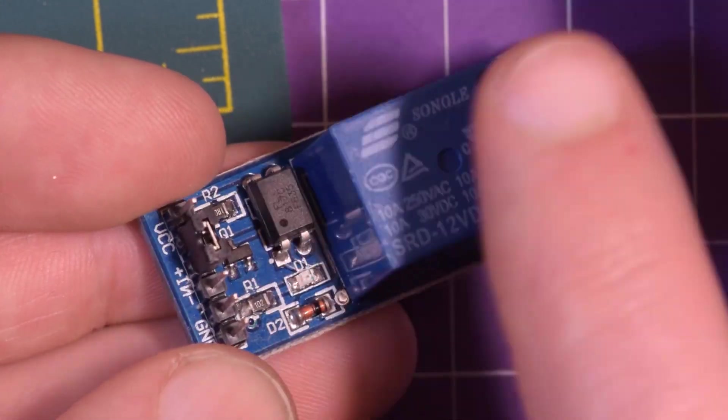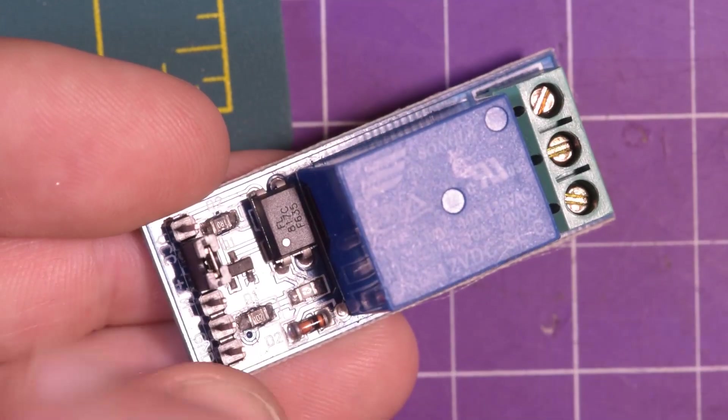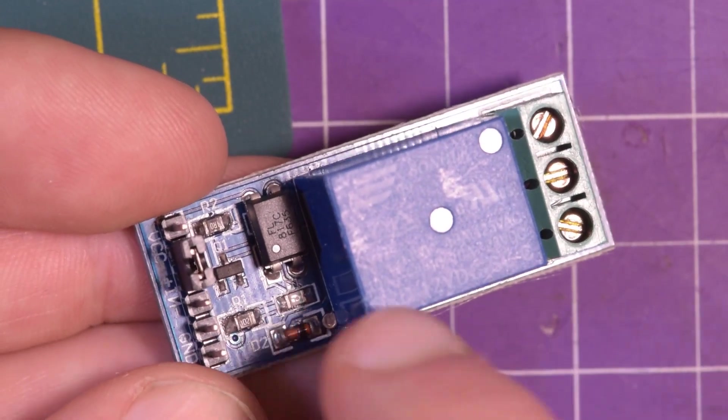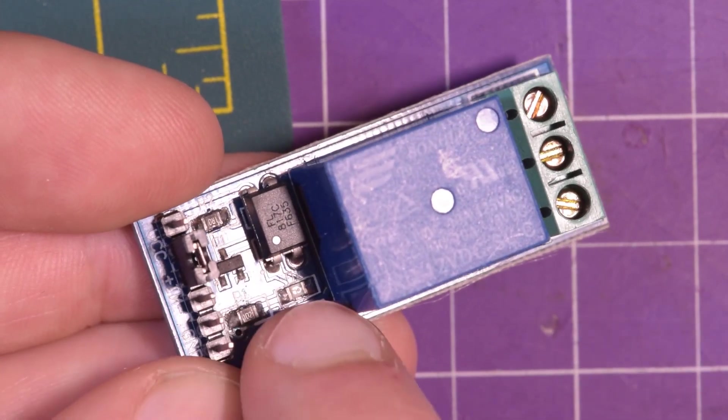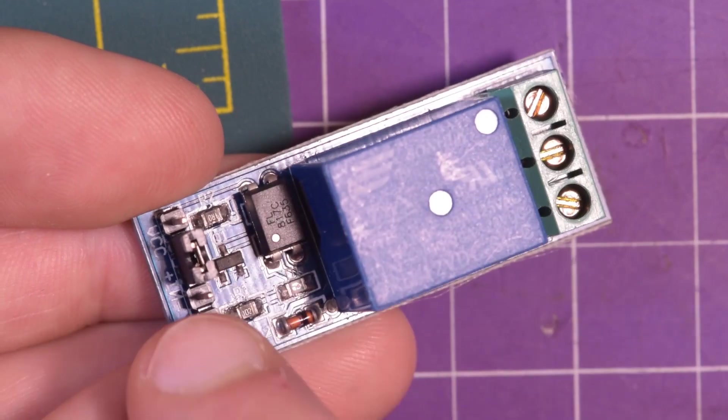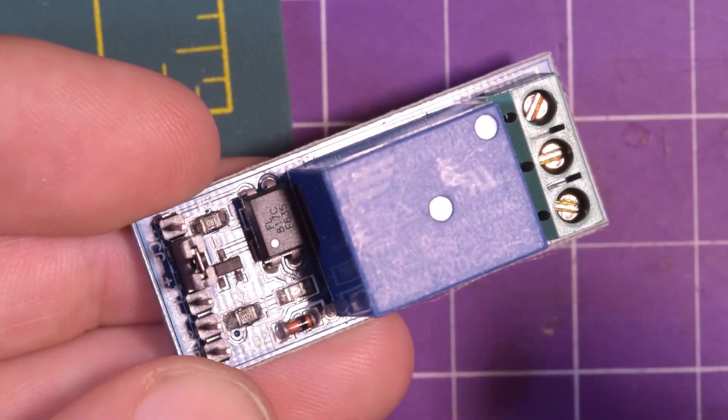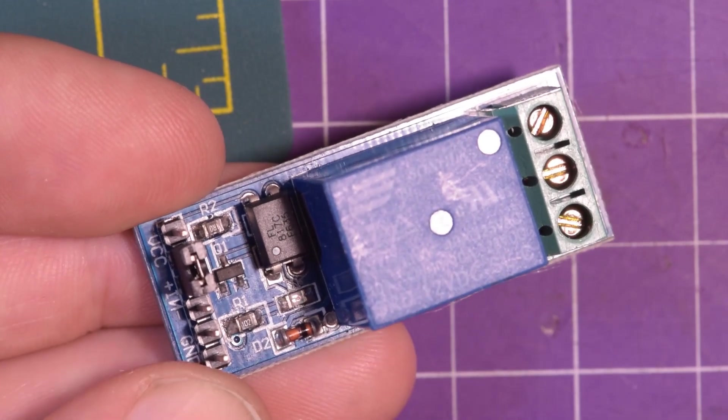So this here is a 12 volt relay that another maker sent me, and on this side here is a little opto isolator. So I assume this is to isolate whatever goes on in the relay end from our microcontroller on this end. And so you probably just control this with a 5 volt signal, which you would never want to get 12 volts back on.